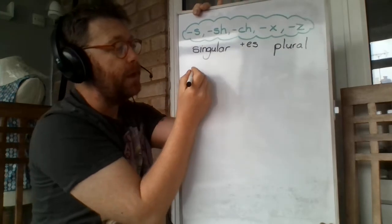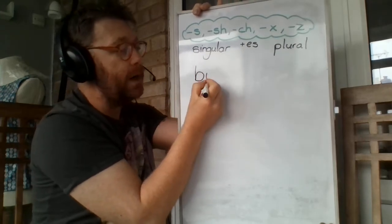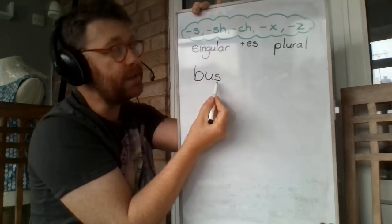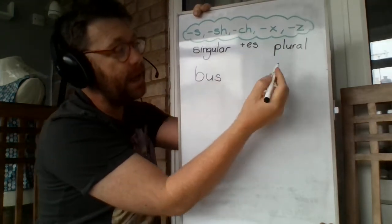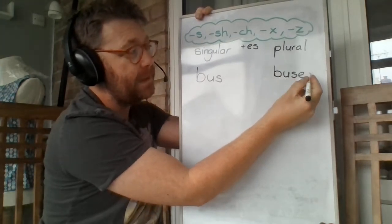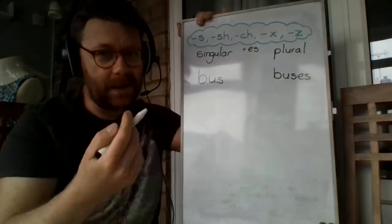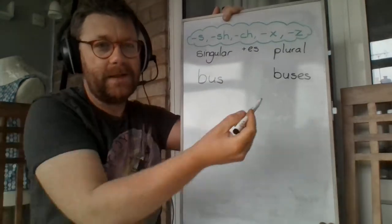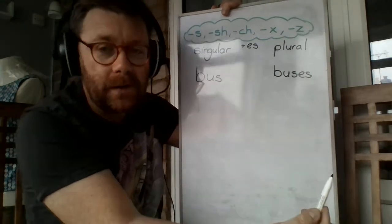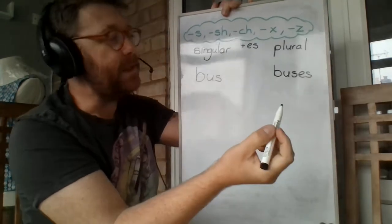So if I see one bus, look, can you see it's ended with S? So here it is. Look, we have to add ES, which means there are lots of buses. Sometimes people think it's a double S in there. It's not a double S. It looks like it says buses to me, but that's how the plural of bus is.